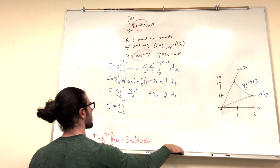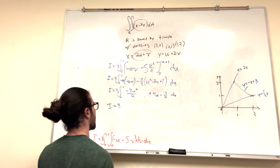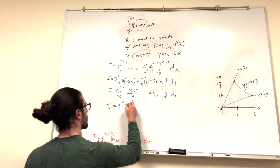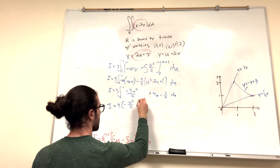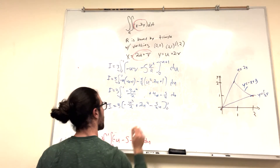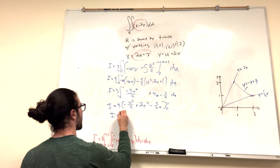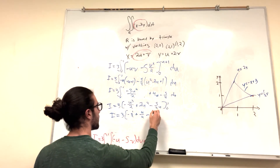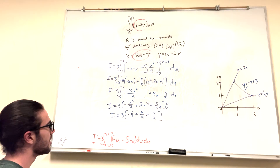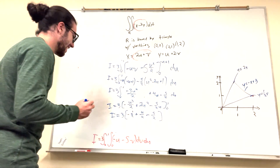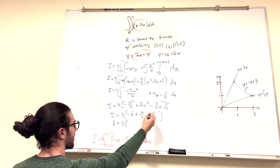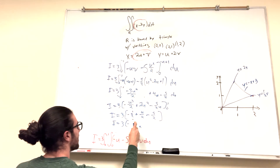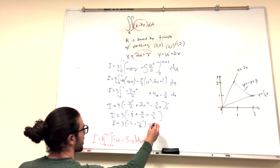So I equals 3 times the integral from 0 to 1 of negative (3/2)u² plus 4u minus 5/2 du. Integrating: negative u³/2 plus 2u² minus (5/2)u, evaluated from 0 to 1. Plugging in u equals 1: negative 1/2 plus 2 minus 5/2. Writing 2 as 4/2: negative 1/2 plus 4/2 minus 5/2 equals negative 2/2 equals negative 1. Then 3 times negative 1 equals negative 3.